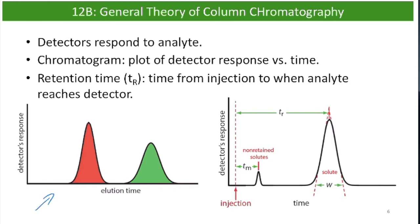This is called a chromatogram — a plot of the detector's response versus the elution time. What you would see in real time is a trace that starts off flat, and then at some specific time the analyte reaches the detector, the signal goes up and then back down as it passes, and then the next analyte comes through producing a second peak. Retention time, or TR, is the time from injection to when the analyte reaches the detector, measured at the very top of the peak. TM is the retention time of an analyte that does not interact with the column at all.